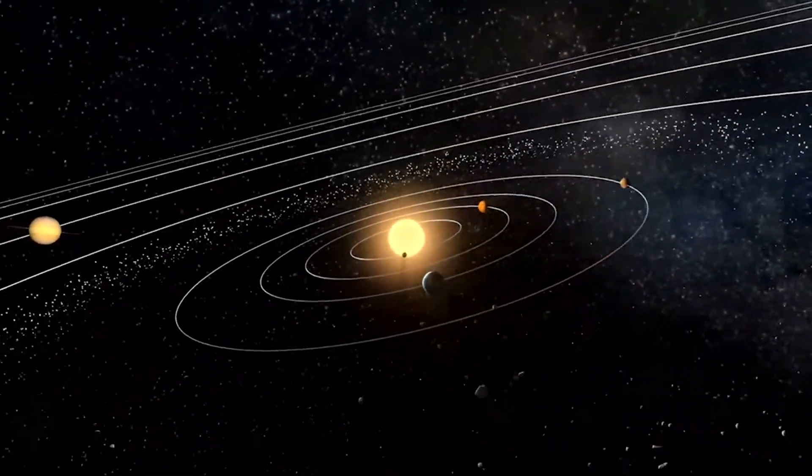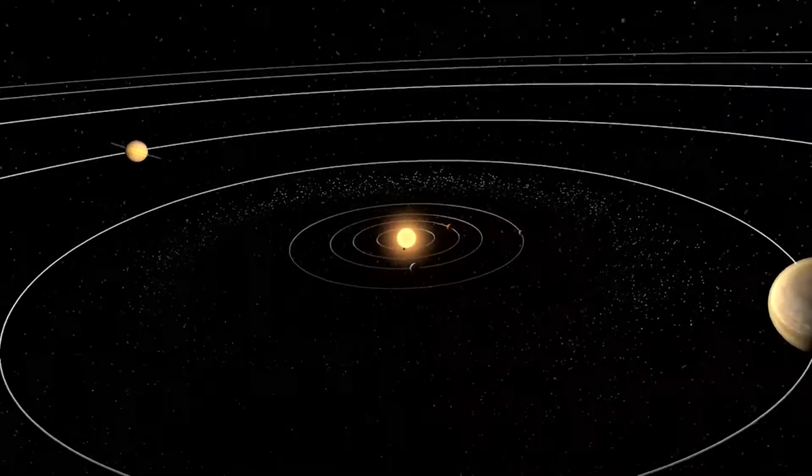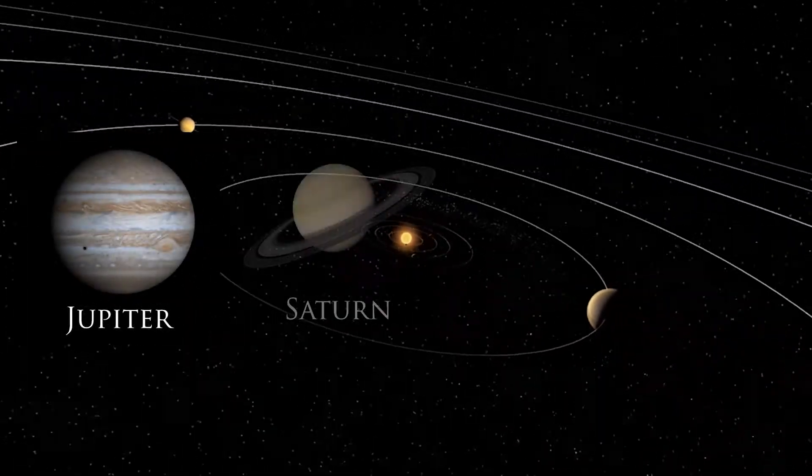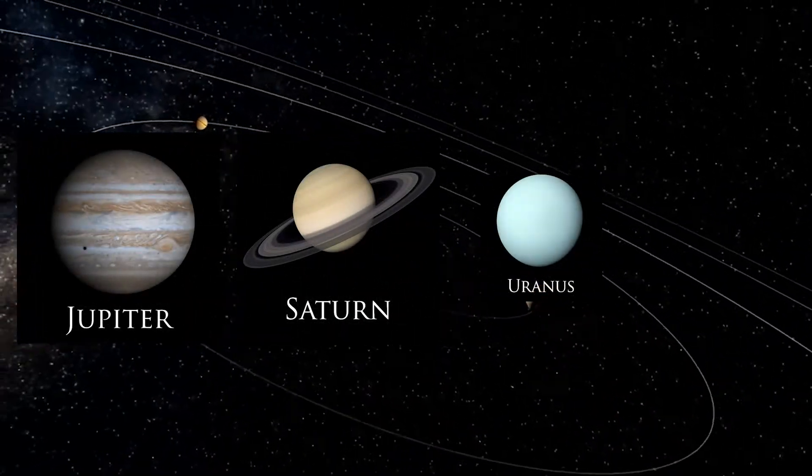Within our solar system we can find four planets that are gas giants: Jupiter, Saturn, Uranus and Neptune.